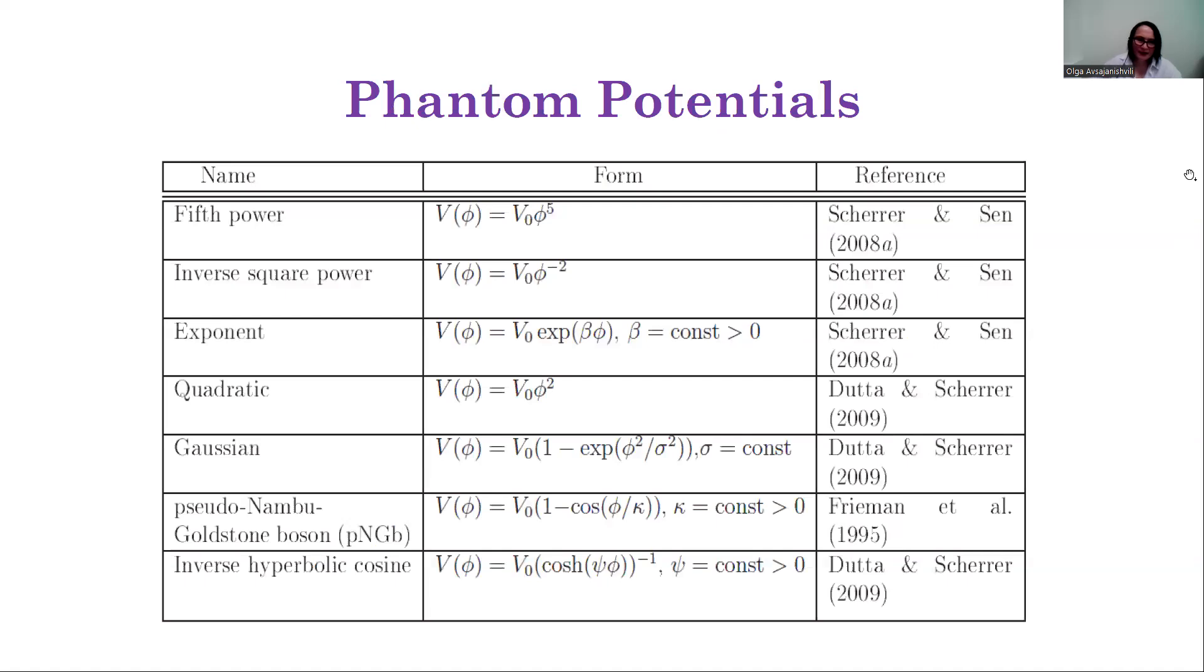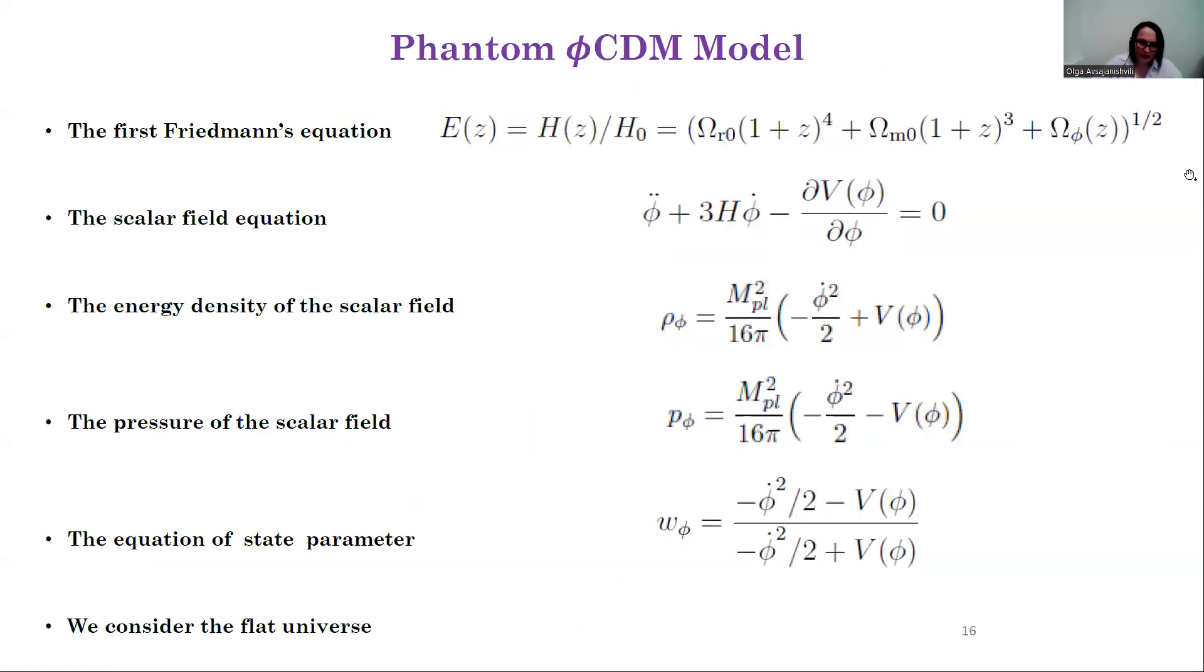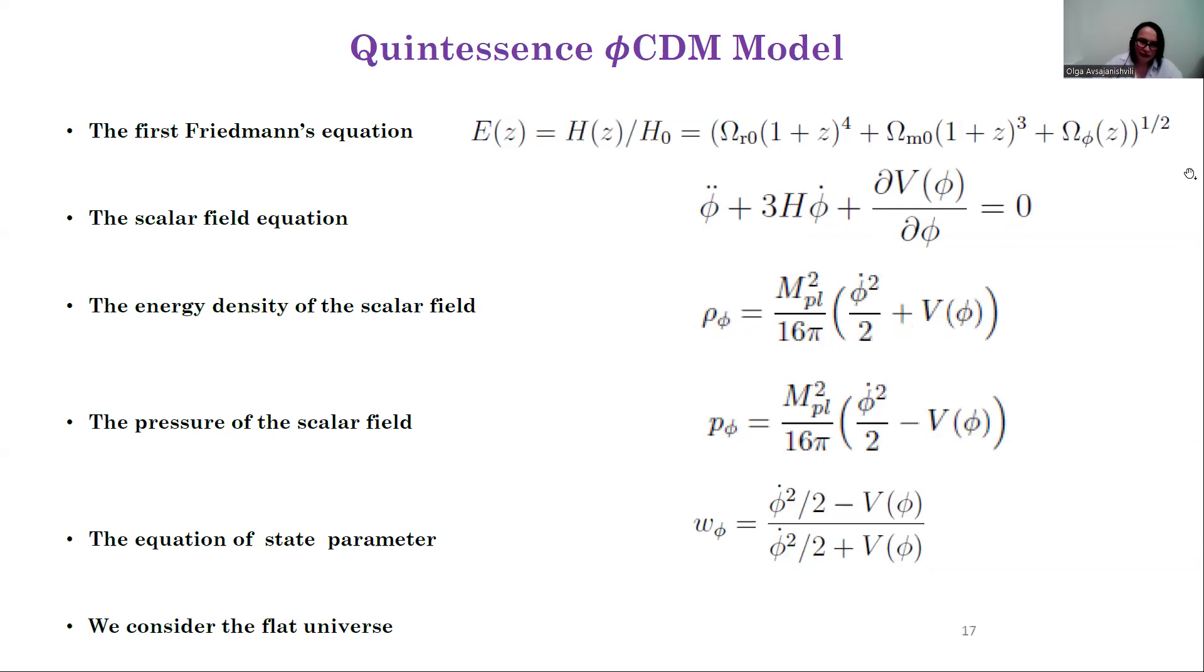We studied seven phantom and ten quintessence scalar field φCDM models with corresponding potentials. We used these sets of equations to study phantom and quintessence models considering the spatially flat universe.